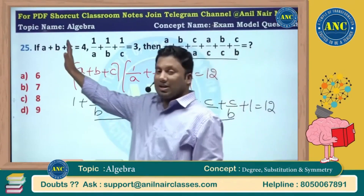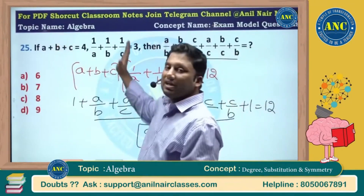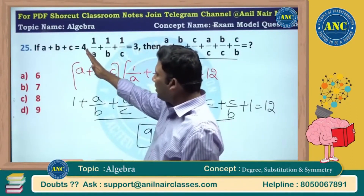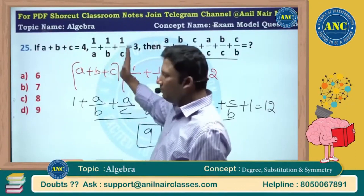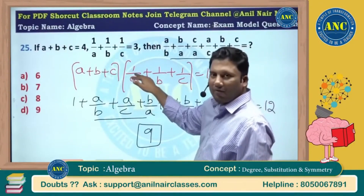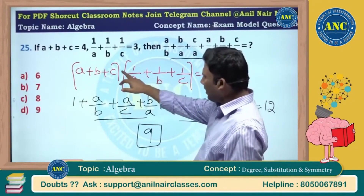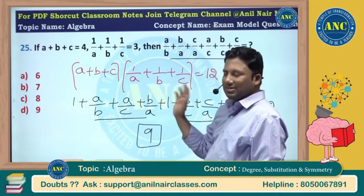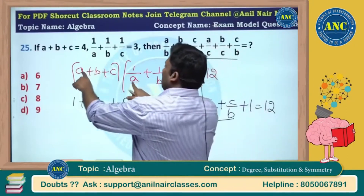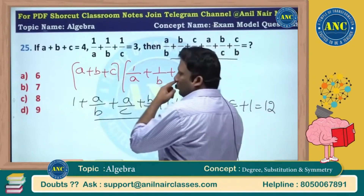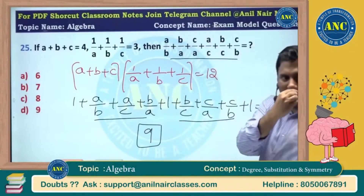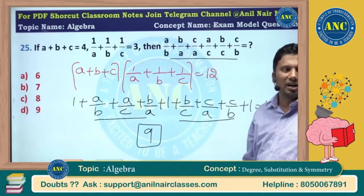Very very easy question. Sum of the variables is given, sum of the reciprocals is given. Multiply both of them: a plus b plus c into 1 by a plus 1 by b plus 1 by c equals 12. a and 1 by a cancel, b and 1 by b cancel, c and 1 by c cancel — that gives 3. The remaining 6 cross terms plus 3 equals 9 terms total. So 12 minus 3 equals 9.